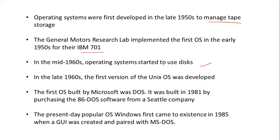In the late 1960s, the first version of the Unix operating system was developed. Many people think the first operating system was Windows, but actually Unix was developed first. The first operating system built by Microsoft was DOS, where everything was command-based — commands needed to be given to the system for it to perform operations.